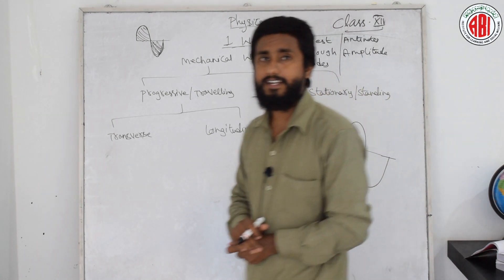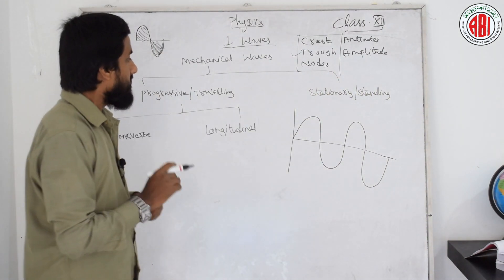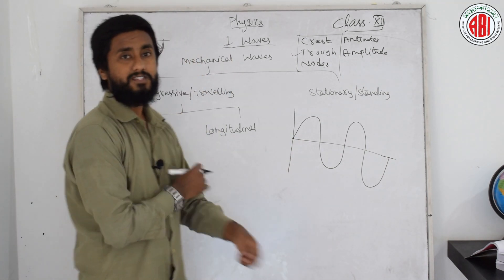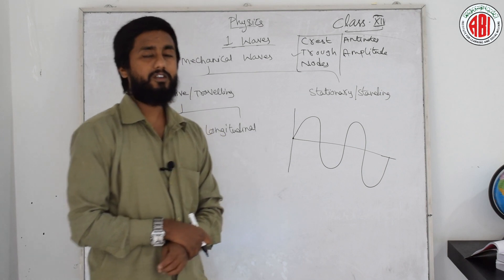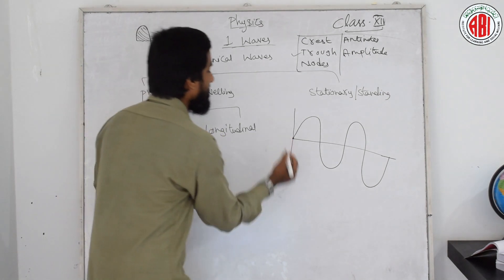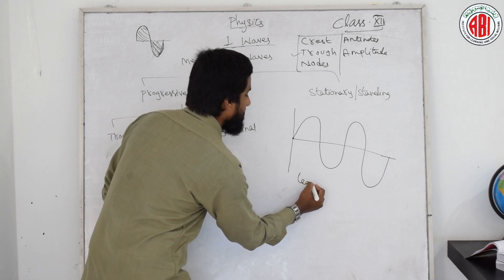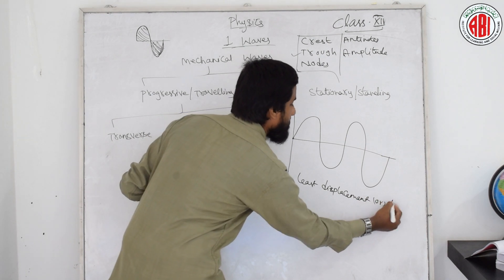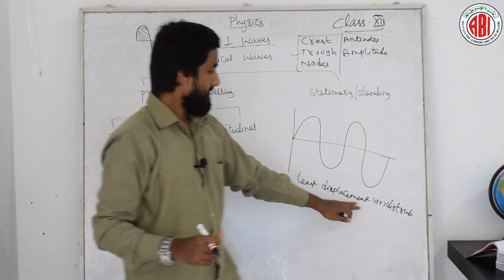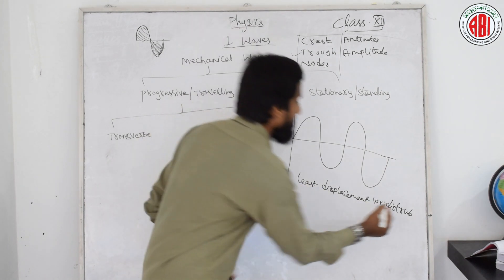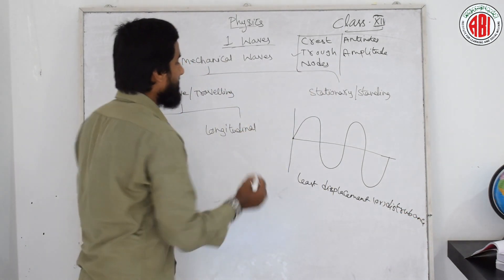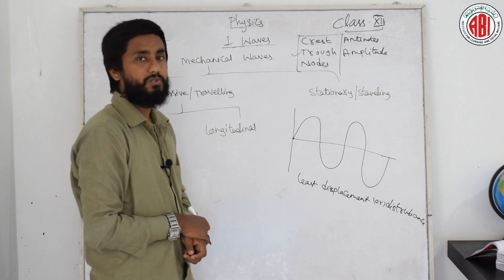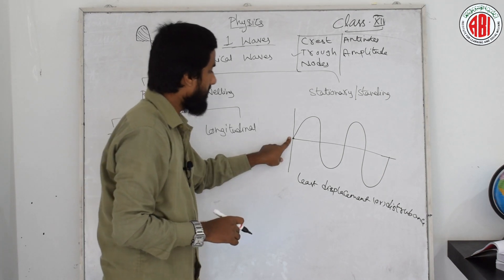What are nodes, antinodes, and amplitude? As you can see, the wave starts from this point and the displacement of the wave is very low — you can see the least disturbance. This is called least displacement or least disturbance. This point is nothing but a node.